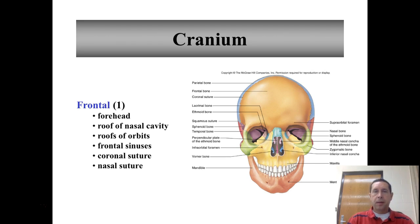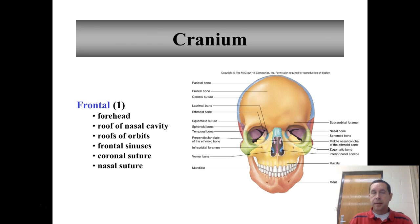The first one is the frontal bone, right there at the front as you can see. It makes up your forehead, the roof or the top of your nasal cavity, and the roof or the top of the orbits. It contains the frontal sinuses and it's connected through the coronal suture to the parietal bones, and through the nasal suture to the nasal bones.